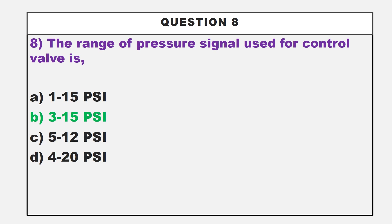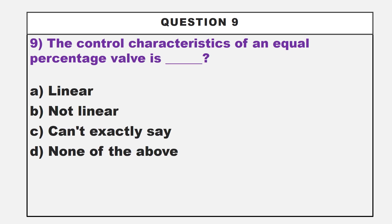We are moving to our next question. The control characteristics of an equal percentage valve is dash. Option A: linear. Option B: not linear. Option C: can't exactly say. Option D: none of the above.